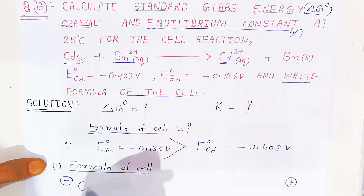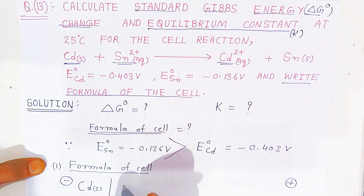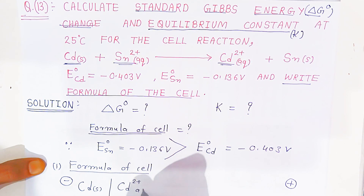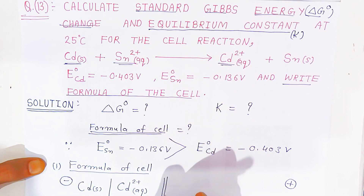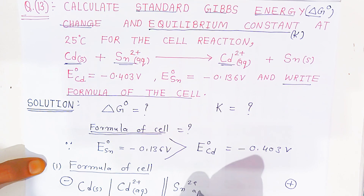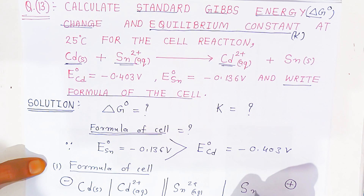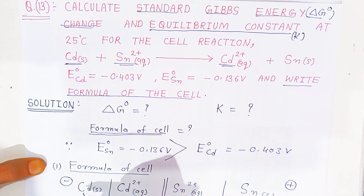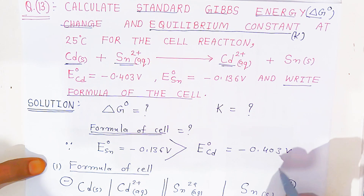So the cell formula is: cadmium solid in contact with cadmium 2-plus aqueous, connected via a salt bridge to stannous 2-plus aqueous in contact with stannous solid. Electrons migrate from the anode to the cathode. This is the formula of the cell.